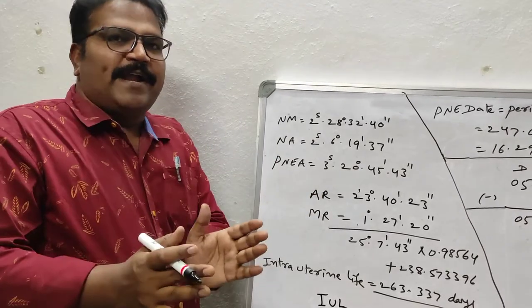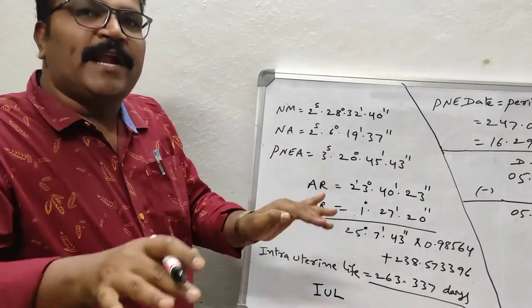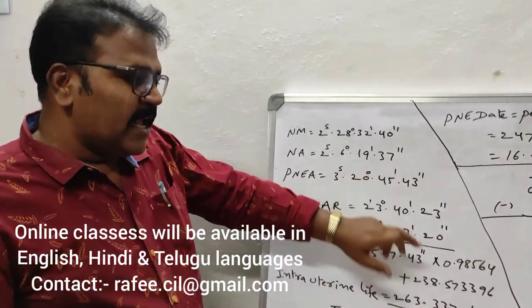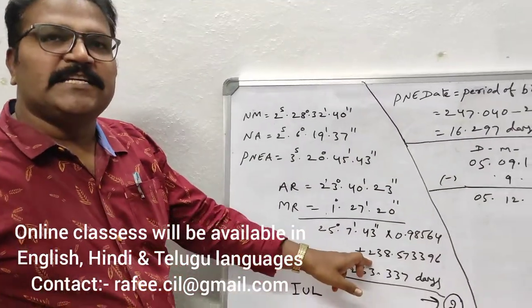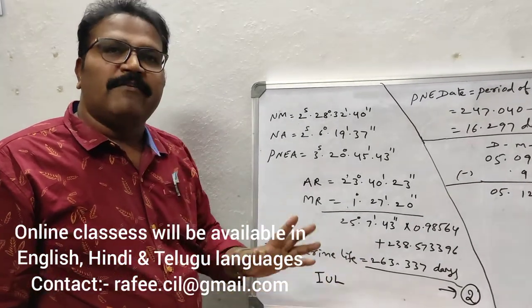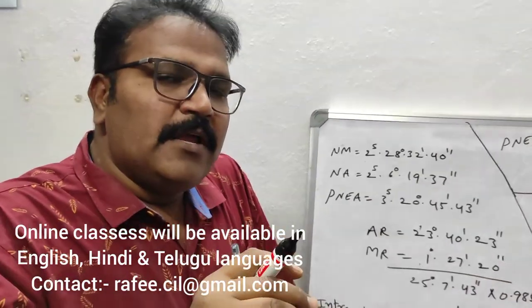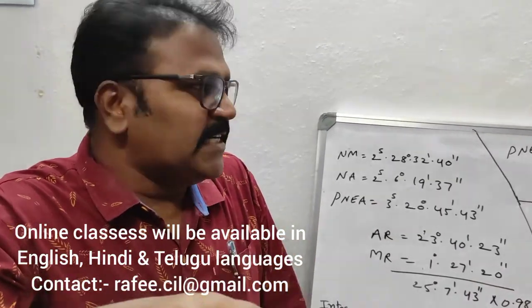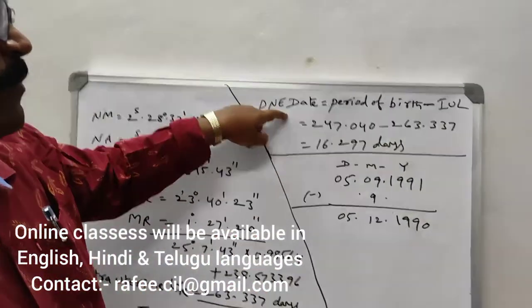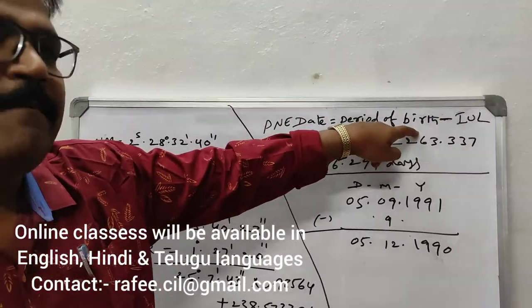So AR and MR should be added. To get AR and MR, from 30 degrees, this degree should be subtracted. Then, addition and multiplication, and finally addition. The total gives us this number — these days are called intrauterine life, IUL in simplified form, or in other words, duration of pregnancy. The PNEA date equals period of birth time minus IUL.